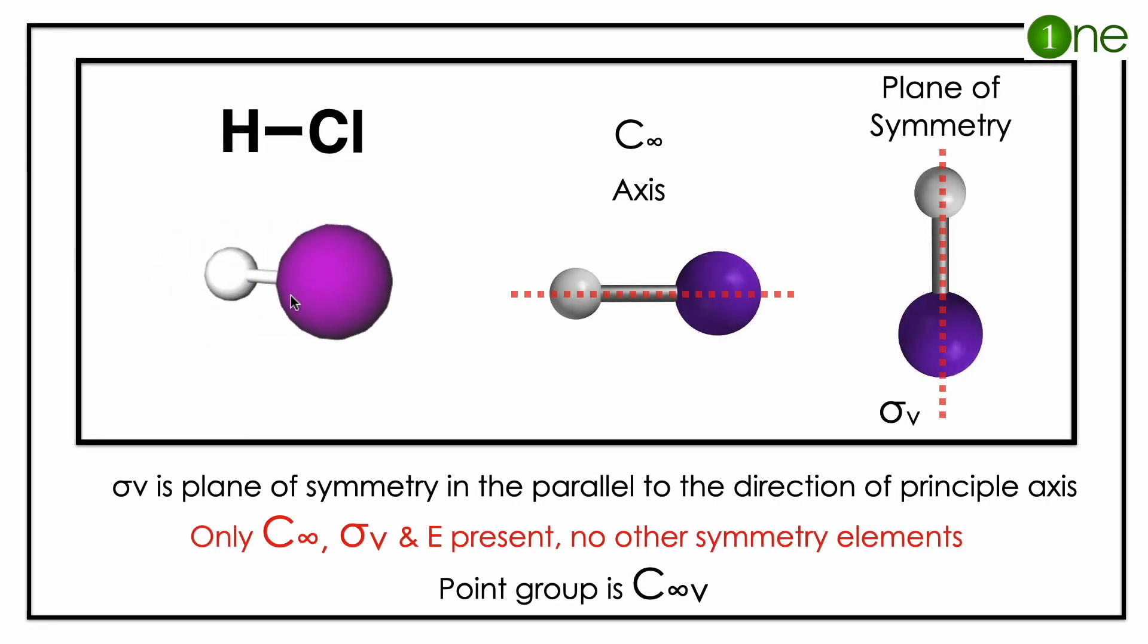The HCl molecule is straightforward. Hydrogen and chlorine form a diatomic molecule. Hydrogen and chlorine are at the terminals, connected with a bond. It's like two balls and a stick.